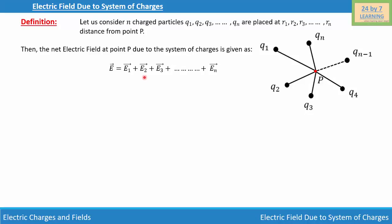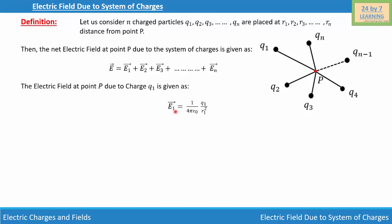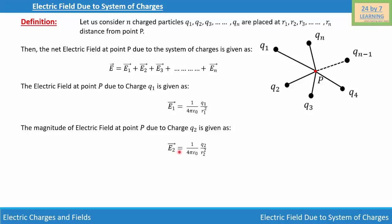In order to do this, I'm going to find the electric field due to each charge particle Q1, Q2, Q3 ... Qn. The electric field at point P due to charge Q1 is given as E1 = 1/(4πε₀) × Q1/R1². In the same way, the magnitude of the electric field at point P due to charge Q2 is given as E2 = 1/(4πε₀) × Q2/R2².